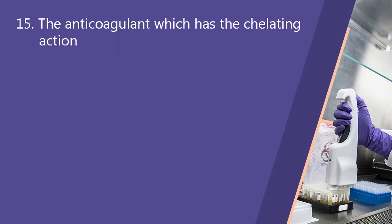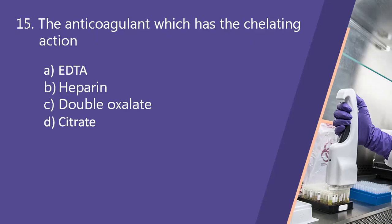Next question: the anticoagulant which has chelating action. Option A, EDTA. Option B, heparin. Option C, double oxalate. Option D, citrate. The right answer is EDTA. Chelating action means it removes free calcium ions, which are essential for coagulation. Advantages of EDTA: it preserves RBC morphology and is used for platelet counts. Disadvantage: EDTA is not used for coagulation studies.